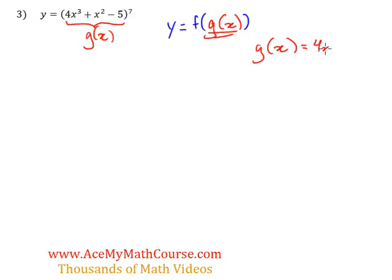And what about our outer function? Well, that will be simple, won't it? Yes, it will be just x to the 7. So f(x), I'll write it down here, will be x to the power of 7.